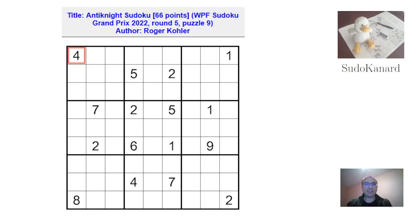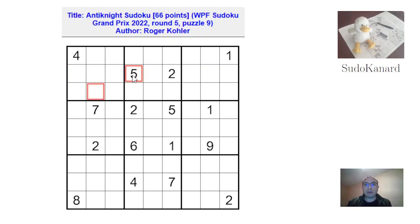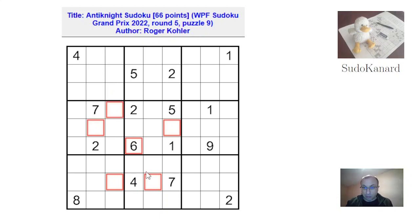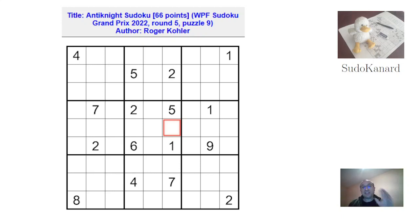Hello and welcome to Sudokanar. This is the last puzzle I need to solve from the Swiss round for the WPF Sudoku Grand Prix. The puzzle is by Roger Kola and the title is Anti-Knight Sudoku. The special rule is that whenever two cells are separated by a knight's move, like in chess, those digits must be different. I managed to solve it during the contest, but since then I failed a couple of times on video, so after a few days of rest I'm giving it another try.